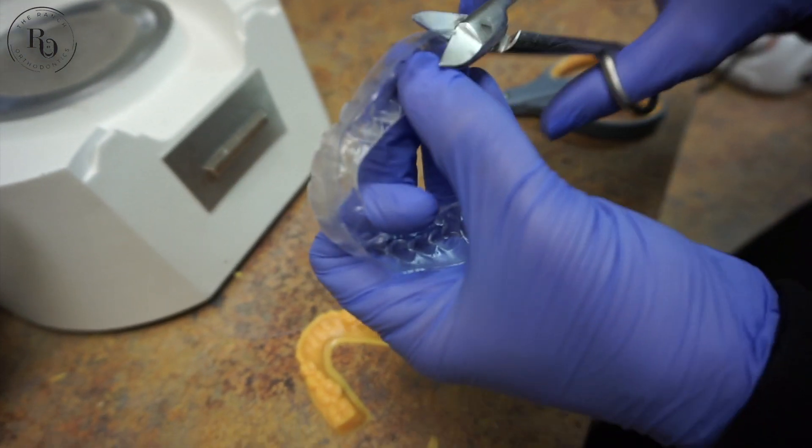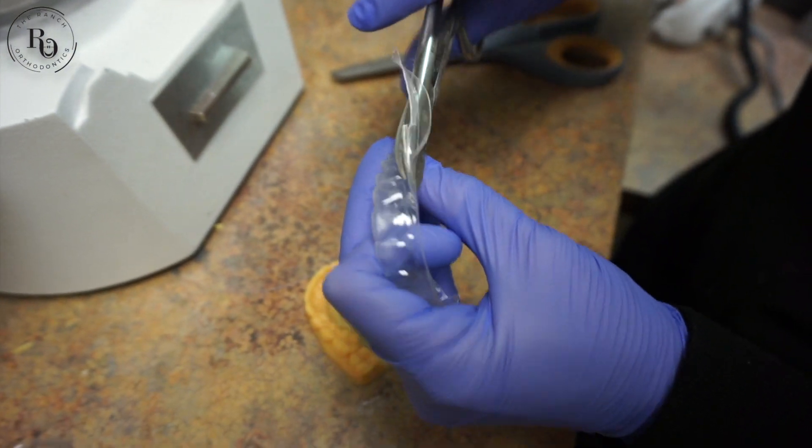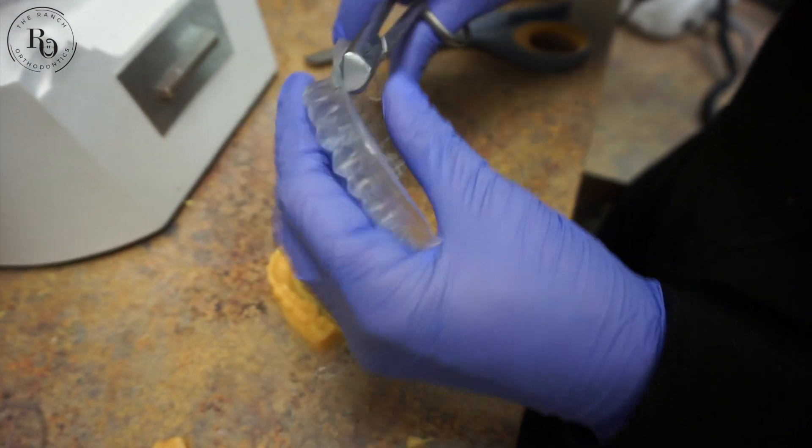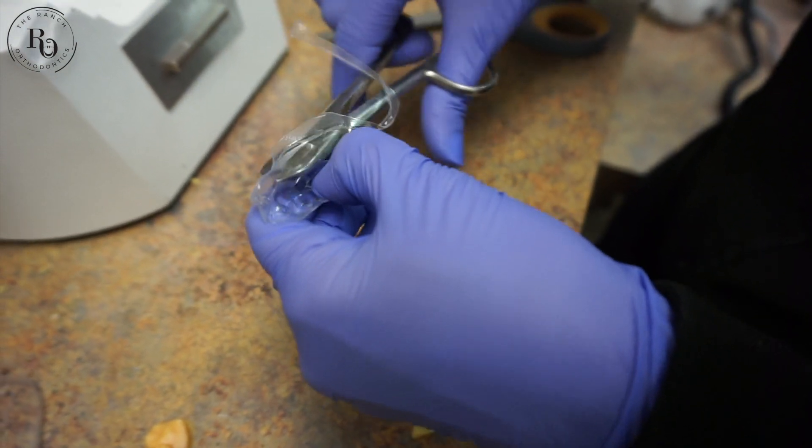That is one of the benefits of us doing it by hand. We get to really look at it and inspect them thoroughly. She's just cutting around making sure that all that extra plastic is off and then we'll move on to polishing.